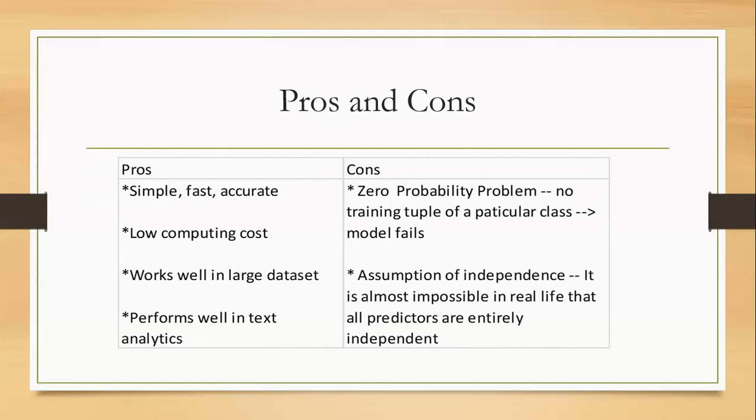The cons: one is the zero probability problem. If you notice that we are depending on the probabilities of each of the classes. We might think of a problem if we don't have a training data for a particular class, then this would cause the model to fail.